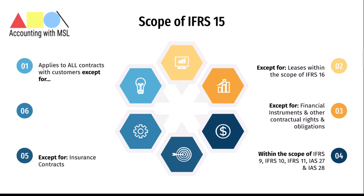The next item that is out of scope is insurance contracts, which are currently governed by IFRS 4 Insurance Contracts but will be replaced by the new insurance standard IFRS 17. And finally, non-monetary exchanges between entities in the same line of business to facilitate sales to customers or potential customers would also be out of scope of IFRS 15.